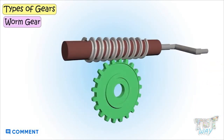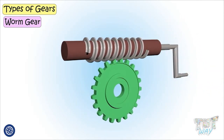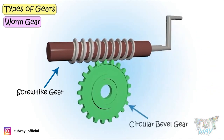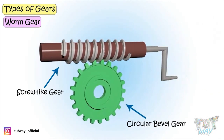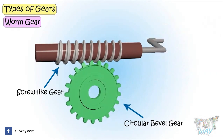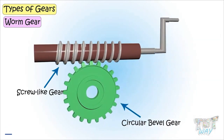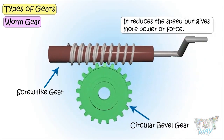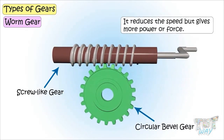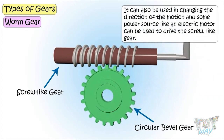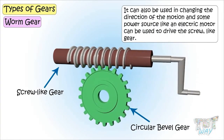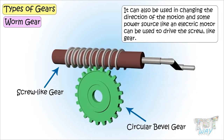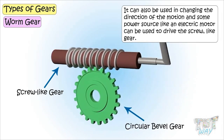Next we have worm gear. Here a screw-like gear drives a big circular gear, and this arrangement is known as a worm gear. It reduces speed but gives more power or force. It can also be used in changing the direction of the motion. Some power source like a motor can be used to drive the screw-like gear.